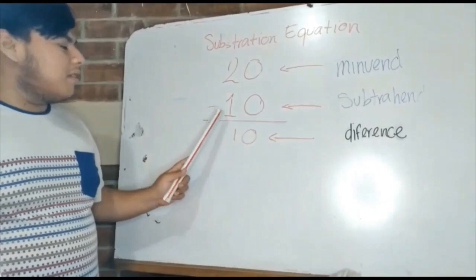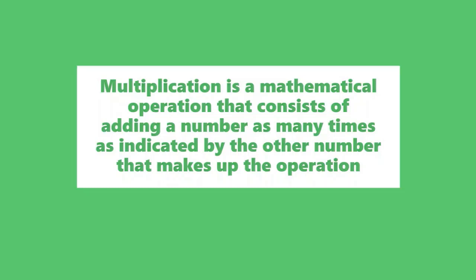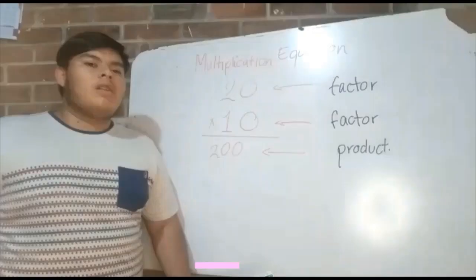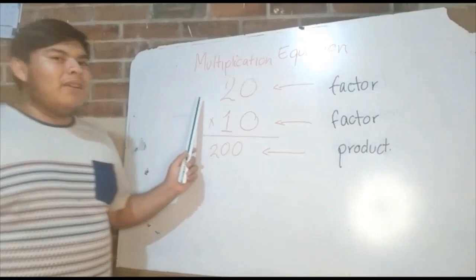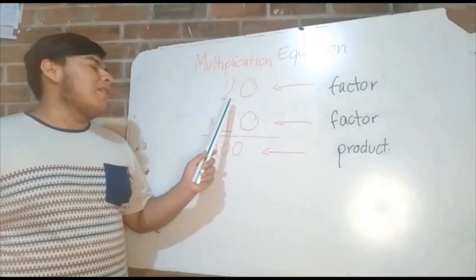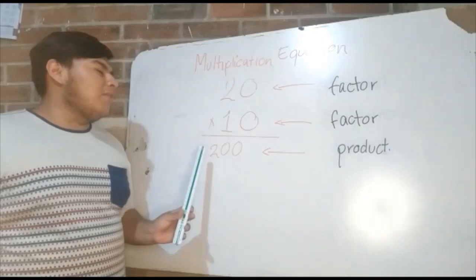Multiplication is a mathematical operation that consists of adding a number as many times as indicated by the other number making up the expression. Multiplication equation: factor times factor equals product. When we multiply twenty times ten, the answer is two hundred.